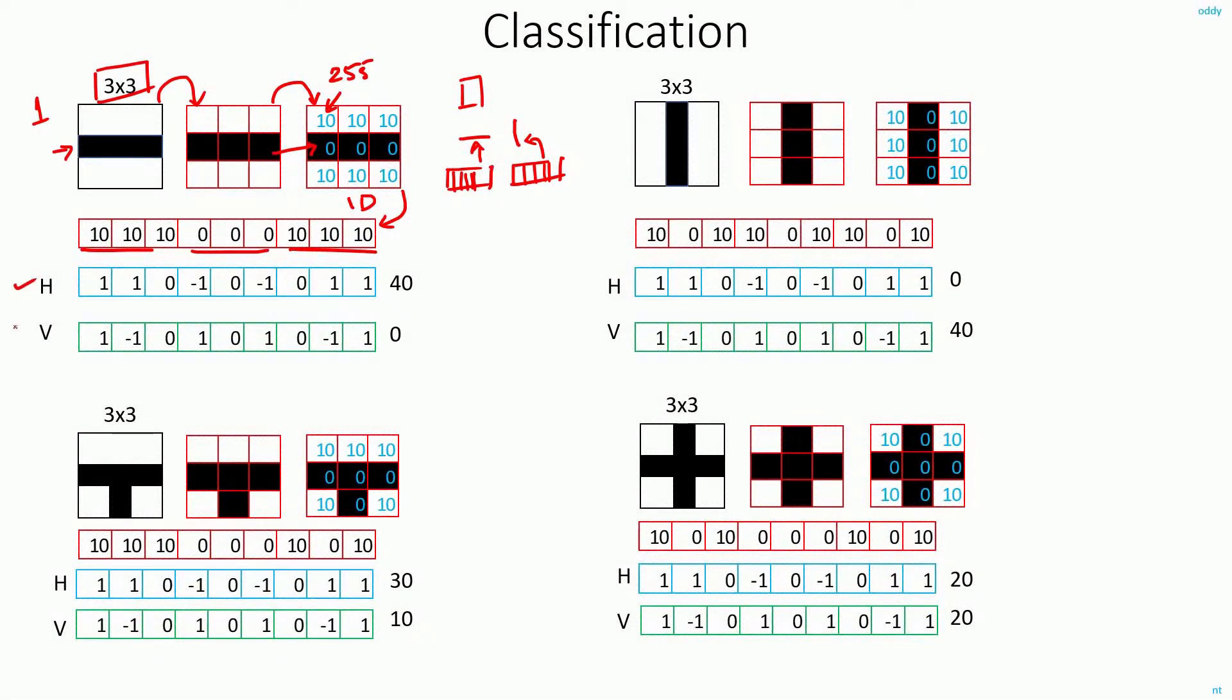These are the filters that I chose to detect horizontal and vertical edges respectively. Now if I do the dot product of this filter with this vector, then I get a value of 40. And if I do the dot product of this filter with this vector, I will get a value of 0. Now to finally decide, I just need to see which is the highest of these two values. In this case, 40 is a higher value, so that's how I conclude that this image has a horizontal edge.